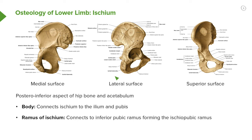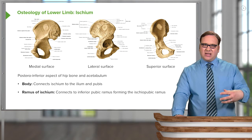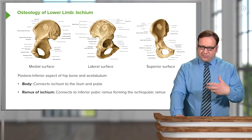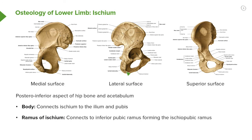We can also recognise the ramus of the ischium, and the ramus of the ischium is important — it connects the inferior pubic ramus of the pubic bone. If we look at this lateral view, we can see running down here from the body of the ischium, we have the ramus of the ischium, and that runs towards the inferior pubic ramus. Collectively, that forms the ischiopubic ramus, which we can see on this lateral surface.